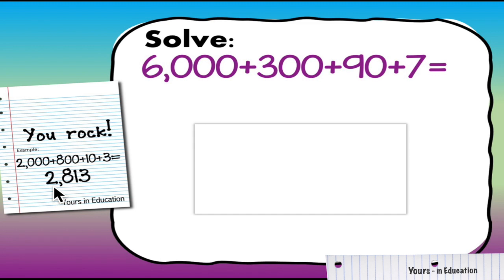Remember this is in the thousands place so this is 2,000. The value of the 8 is 800 because it's in the hundreds place. The value of the 1 is 10 because it's in the tens place and the value of 3 is 3 because it's in the ones place.